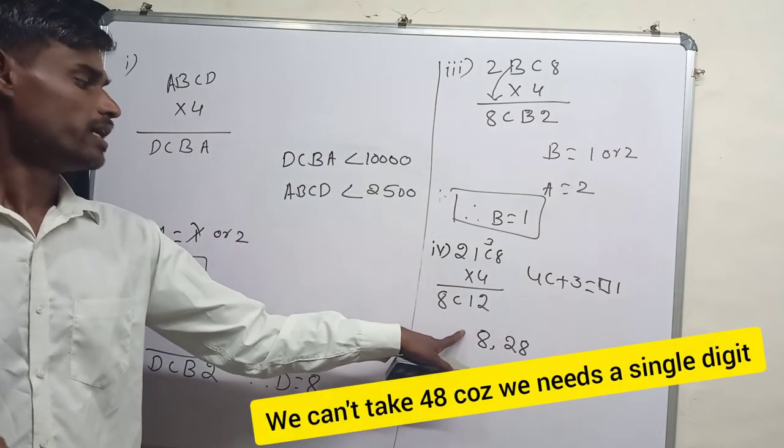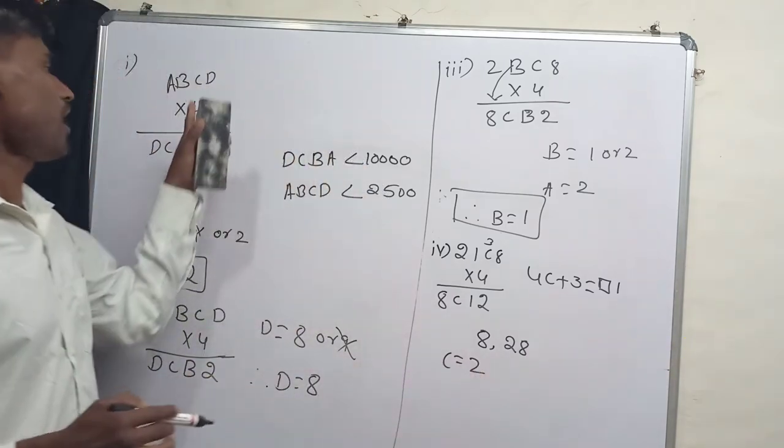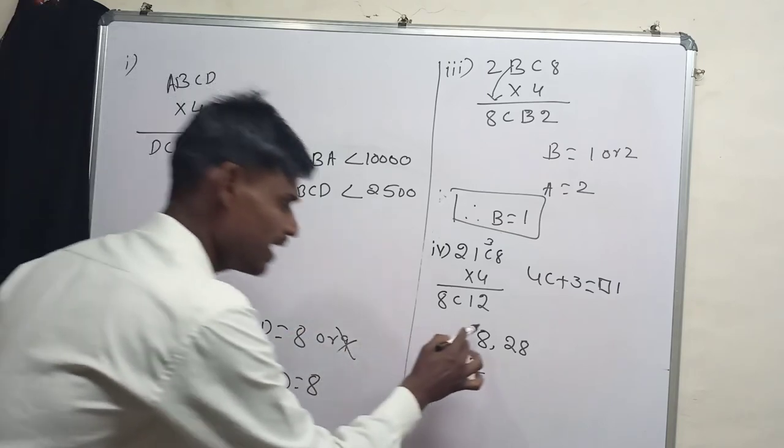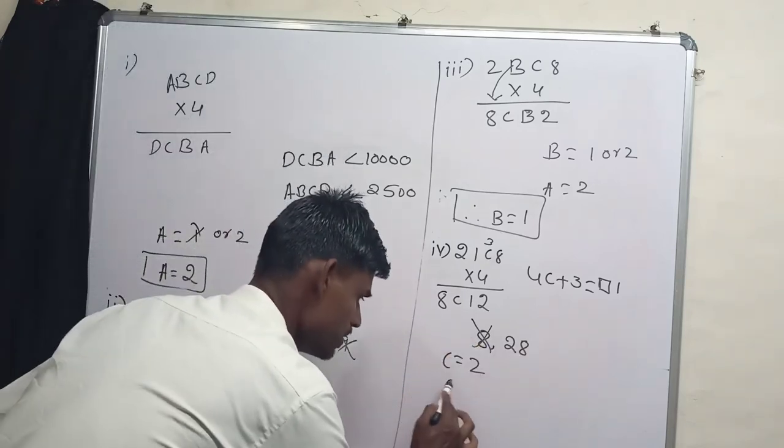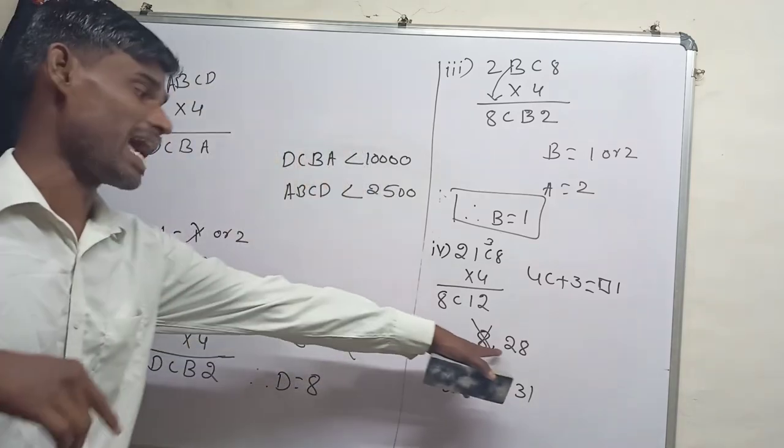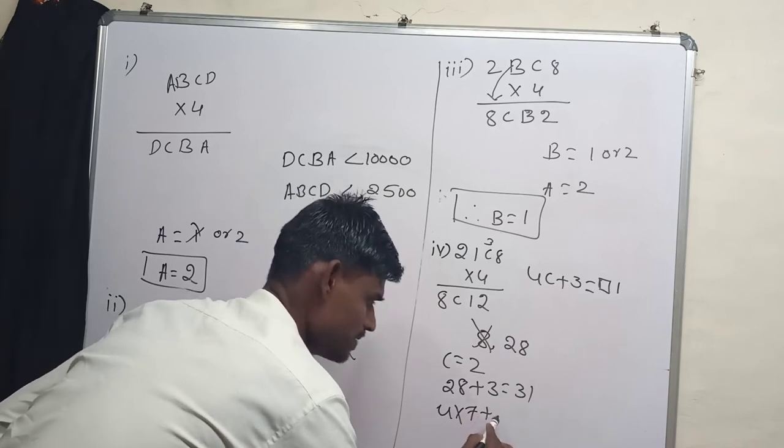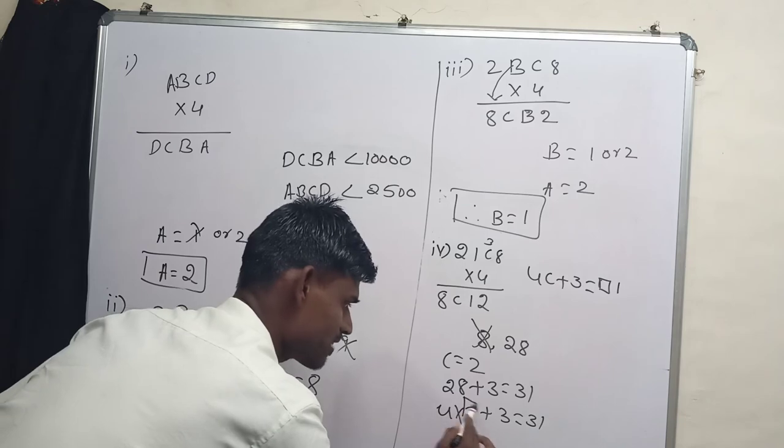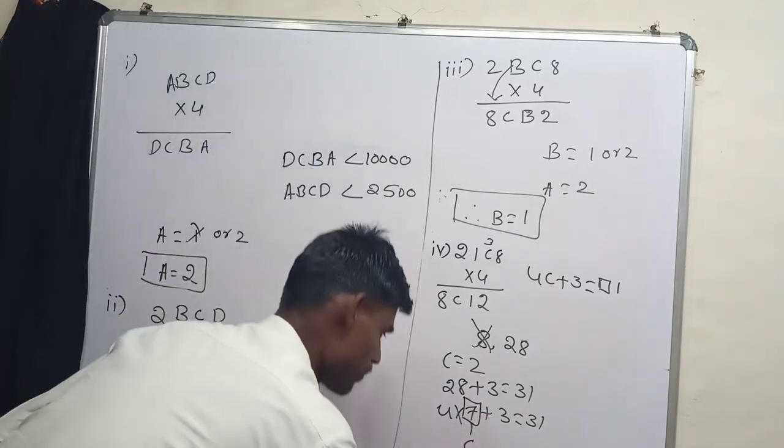So the multiples of 4 are 8, 28. If we consider 8, then C value becomes 2. But we already know that the value of A is 2. So we can't take this 8. Then we have to take 28 because 28 plus 3 equals 31. So if that's the case, then I am going to write 4 into 7 plus 3 equals 31. Then this 7 becomes the value of C.